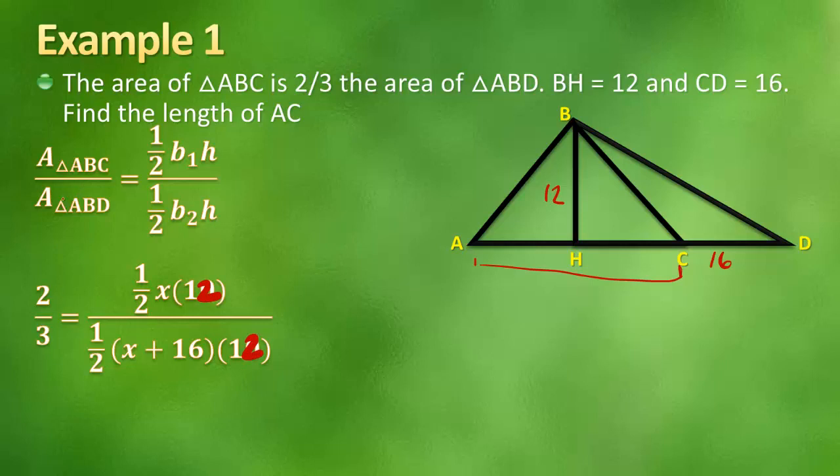So when we set this up, we know that the area of 1 is 2 thirds the other. So that's our ratio. And we have the halves that are going to cancel out. We have the 12s that are going to cancel out, which is going to leave us with 2 thirds equals x over x plus 16, because this piece here is x, which is what we're trying to find, and the ratio of ABD. So that's x plus this 16. So now we have cross products here. So we're going to do 2 times this part here, and then 3 times x, and set them equal to each other. So that's going to give you 2x plus 32, which is this 2 times x, which is a 2x, 2 times 16, which is 32.